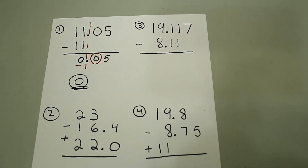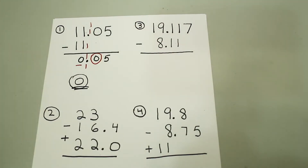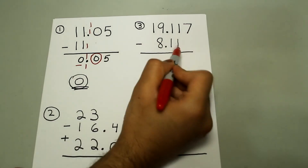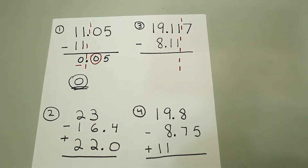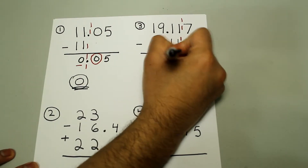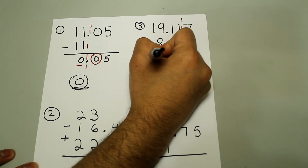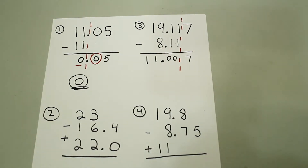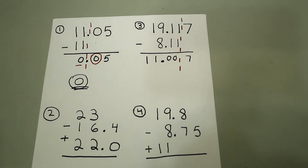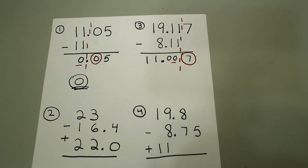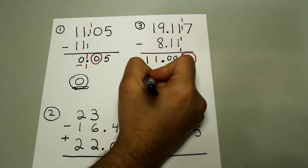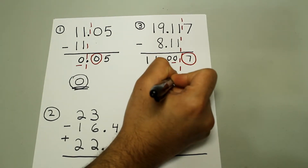We're going to identify which of these two numbers has the least number of decimal places. In this case, 8.11 has the least number of decimal places. So we draw a dashed line right after this 1 that goes through everything. Subtracting straight down, we get 11.007. We know we're rounding to the nearest hundredth, and this 7 tells us if we need to round up or down. Since 7 is greater than 5, we are rounding up, so the final answer will be 11.01.